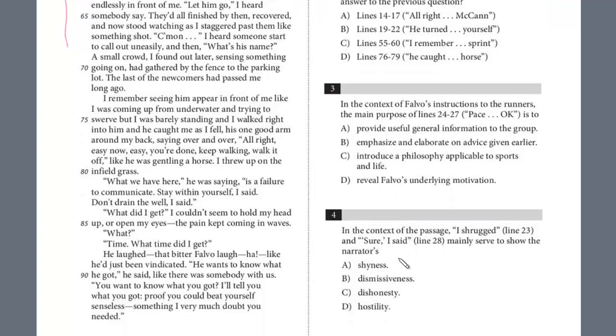This is at the very end of the passage. So remember, this is after Mosier, he was sick. And then Falvo came up to him and he said, what did I get? I couldn't seem to hold my head up or open my eyes. This is Mosier speaking. The pain kept coming. What time? What time did I get? And so even though Mosier got sick, he's still asking what time. And then he laughed that bitter Falvo laugh, ha, like he'd been vindicated. So vindicate, if you know what this word means, it definitely helps. But you can almost kind of gauge it by the context here. He warned him. He warned him twice. Mosier didn't listen. He got sick. And then he came up to him and says, what's my time? And then Falvo almost sort of laughed. He did laugh at him like he'd been vindicated.